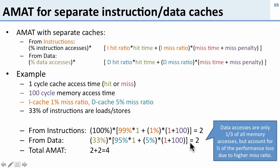And if you look here you'll see that data accesses are only a third of the memory accesses, but because they have a higher miss ratio, they account for half the performance loss.